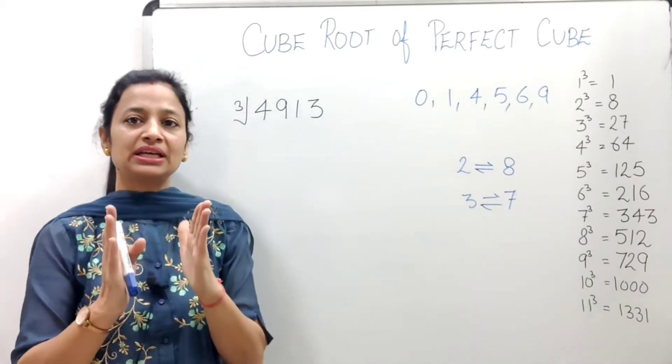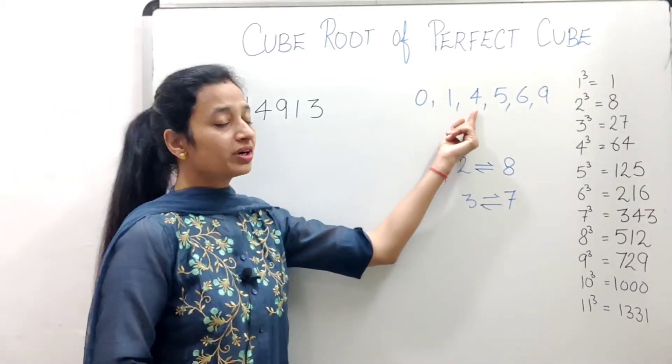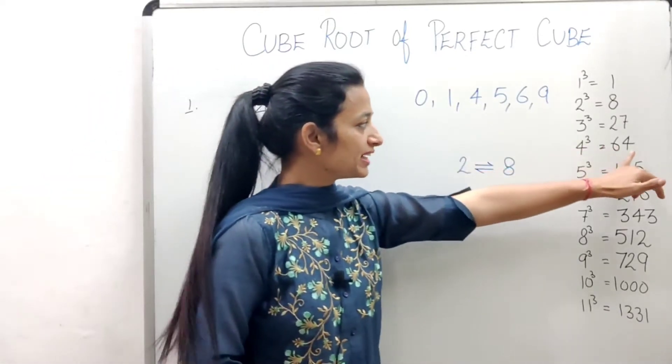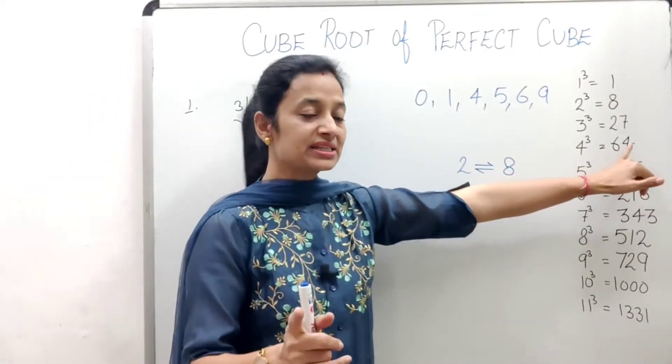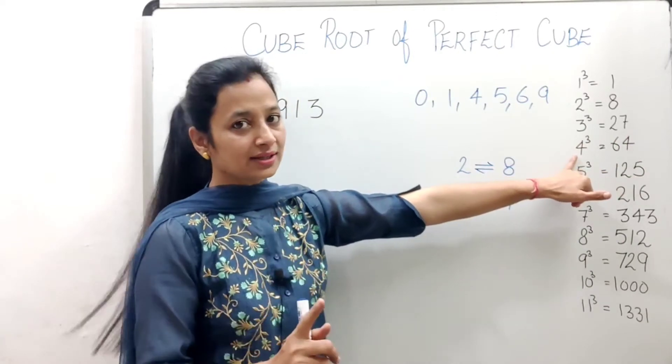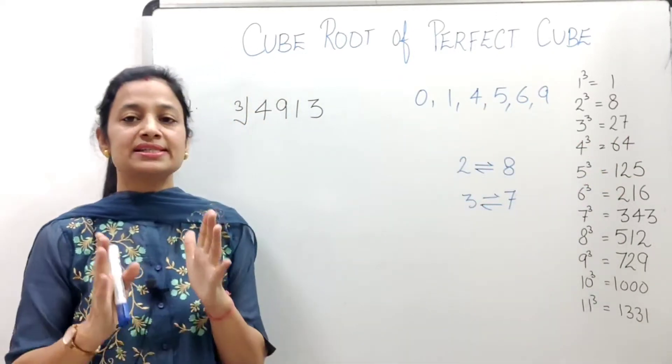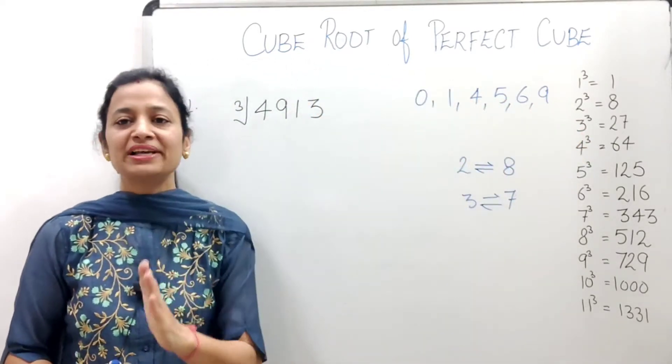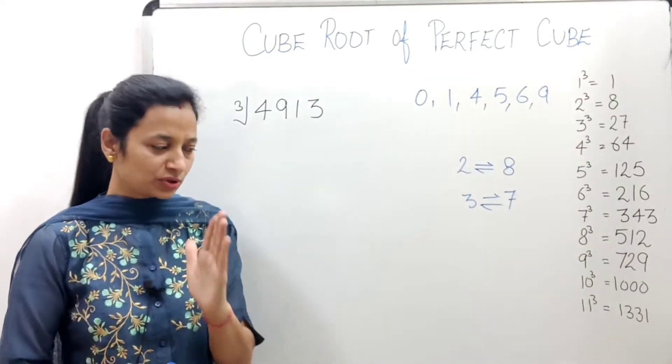When we take the cube of these numbers - for example, if we take 4 cubed, 4 cubed is 64, so at the unit place, we have the same digit as the number we cubed.